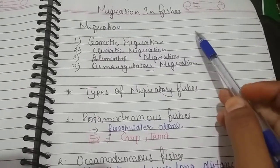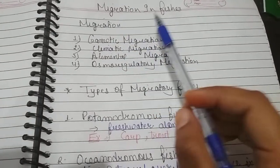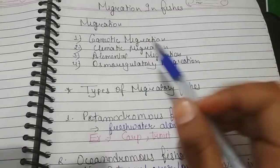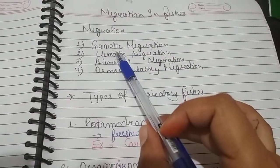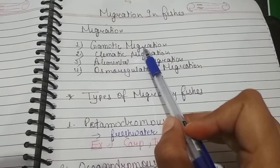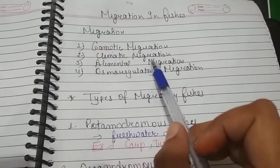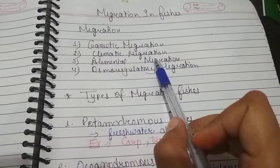Today's topic is migration in fishes. Migration means movement of fishes from one place to another for the following reasons: gametic migration for reproduction, climatic migration to secure more suitable climatic conditions